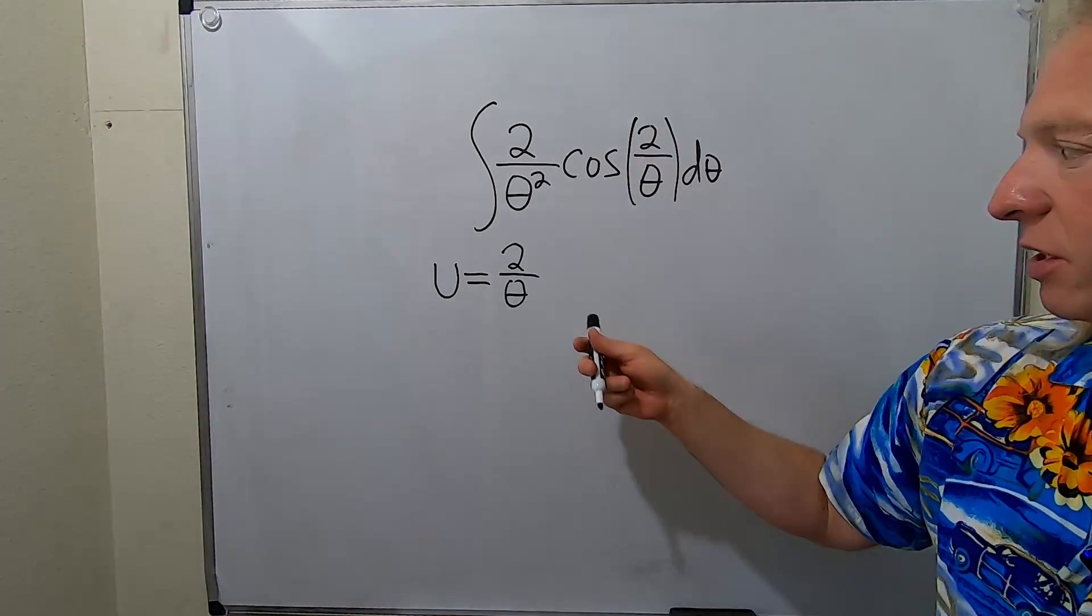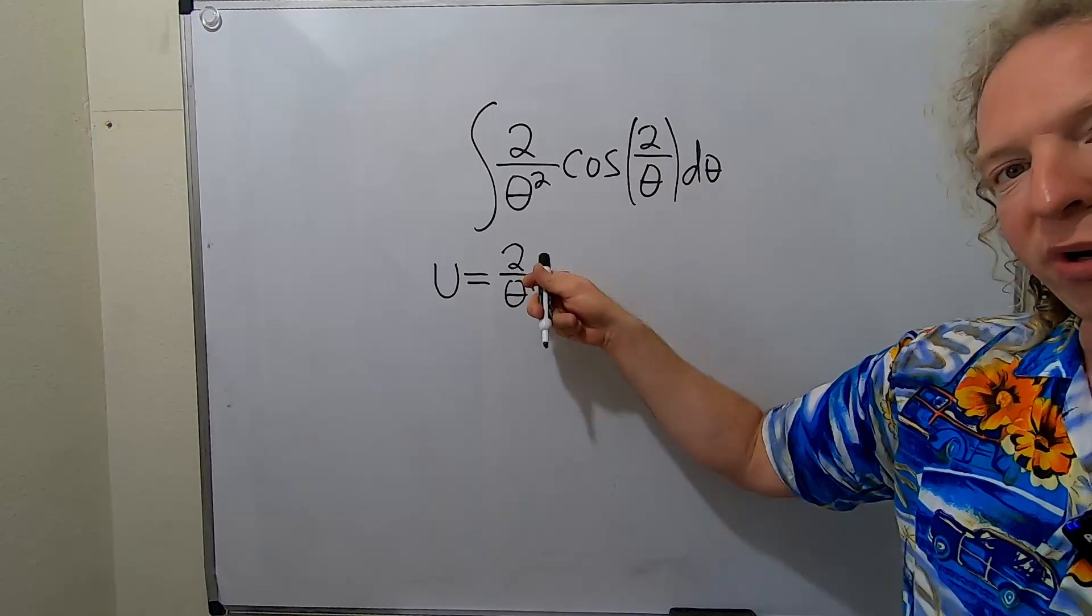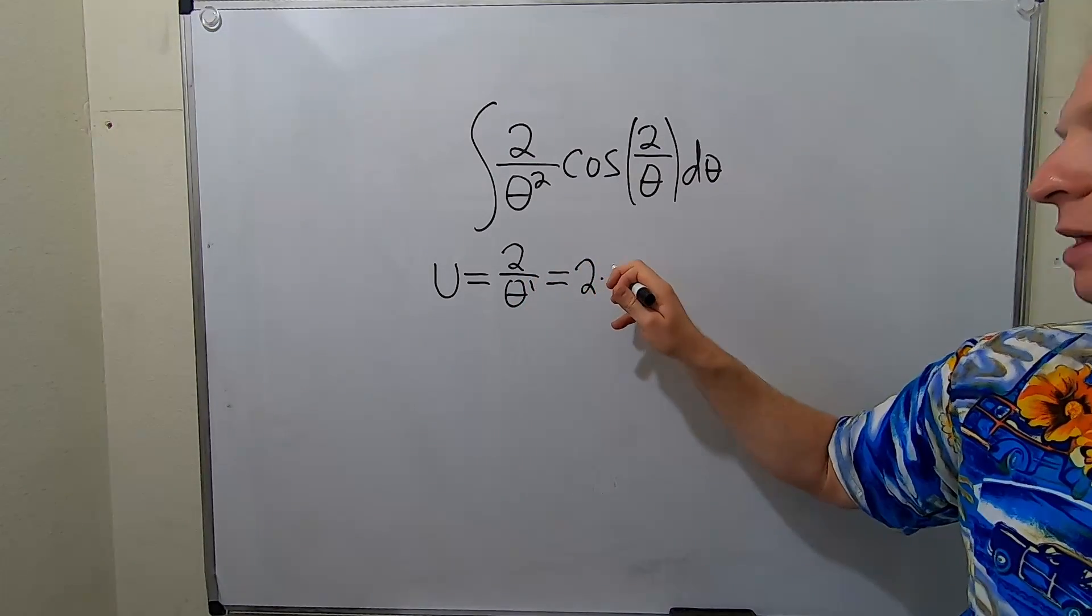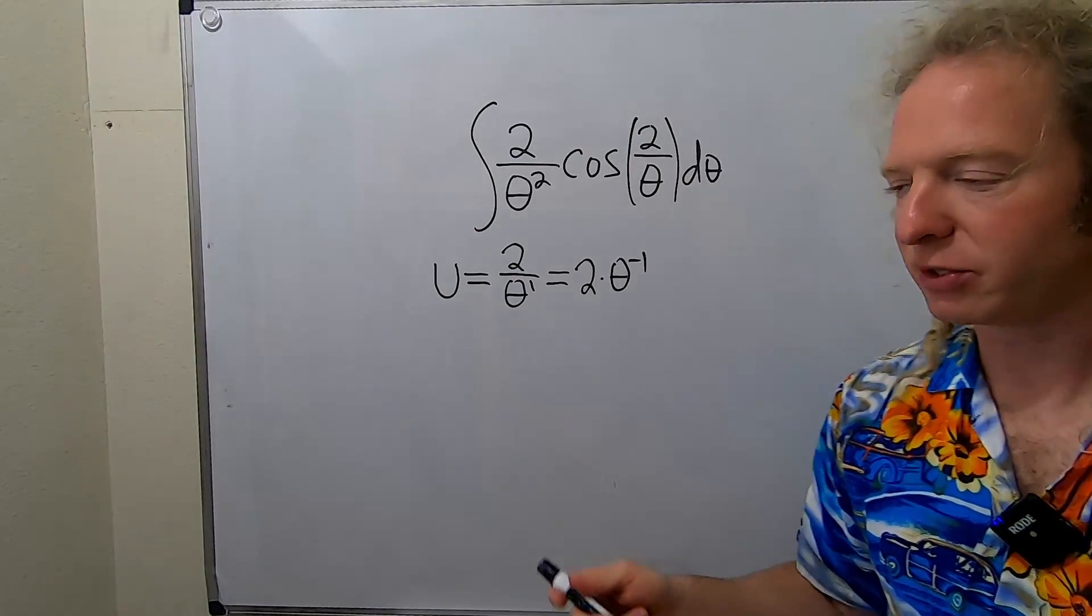In order to differentiate this, you want to bring the theta upstairs. There's really a 1 here. When you bring it up it becomes 2 times theta to the negative 1. That's what happens to exponents.